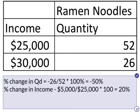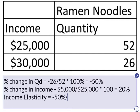The income elasticity is the percent change in the quantity demanded — that first number we calculated — divided by 20%. So the income elasticity is equal to negative 50% divided by 20%, which equals negative 2.5.